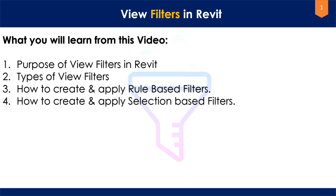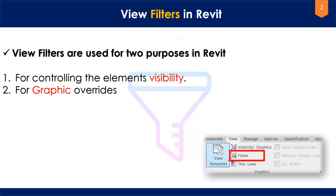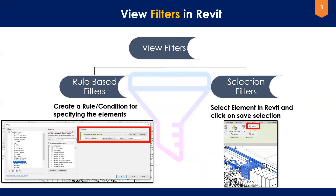There are two main purposes of view filters. The first purpose is to control element visibility — once you've created those filters you can control whether elements are shown or hidden inside the view. The second purpose is to control graphics: you can apply colors, change the line type, and control the graphical appearance of those elements using view filters. So the two important purposes are visibility and graphics.